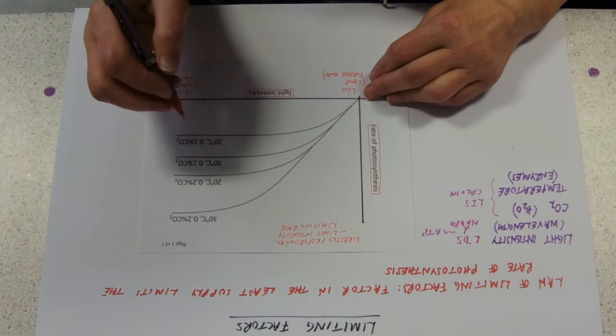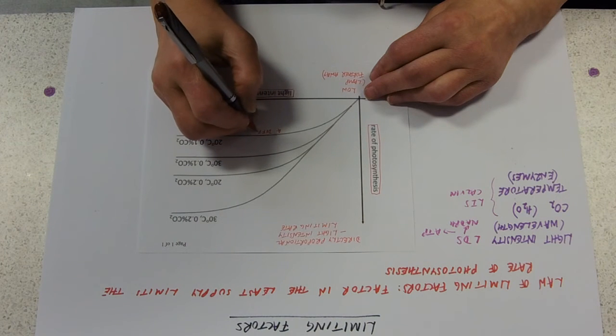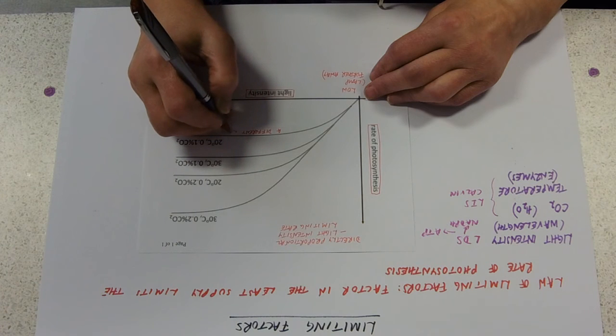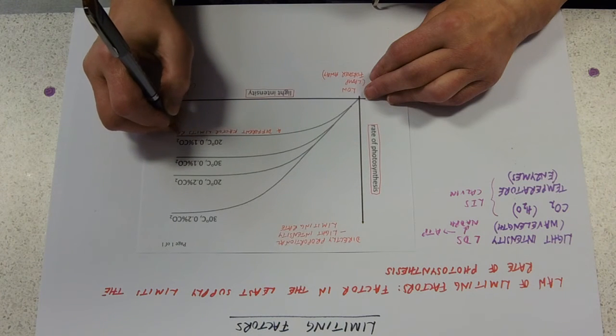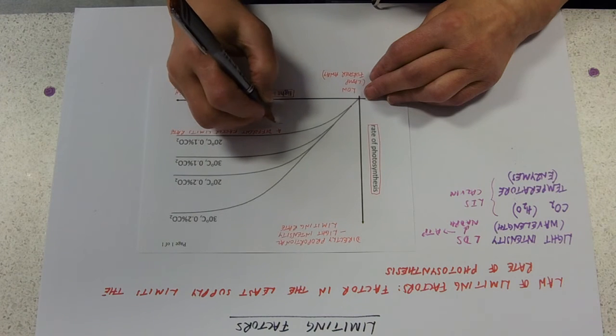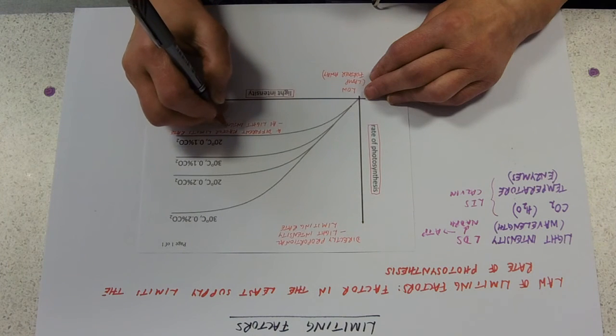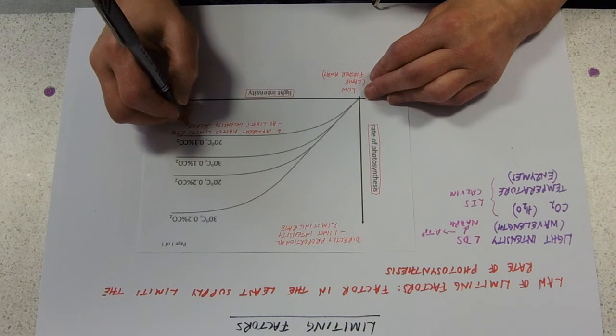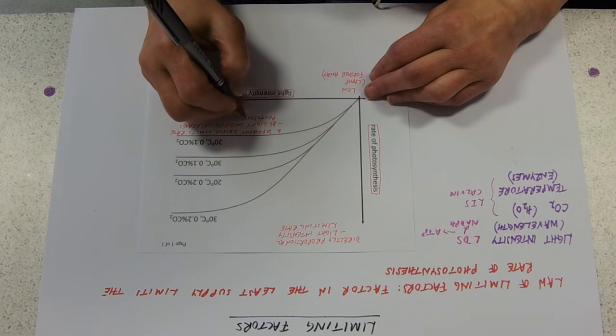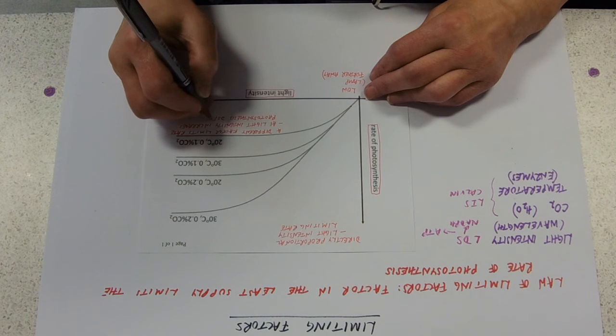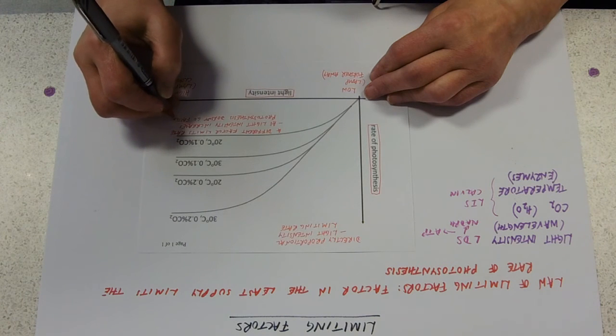So what does this flat line tell us here? That means that a different factor, not light intensity, is limiting. How do we know that? Because as light intensity increases, photosynthesis doesn't go faster. It's going as fast as it possibly can.